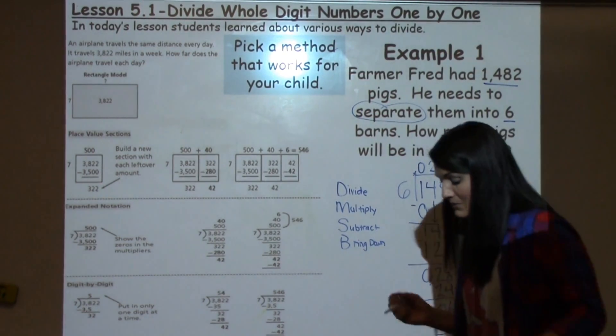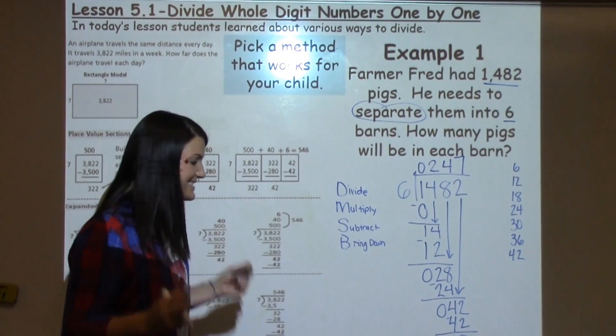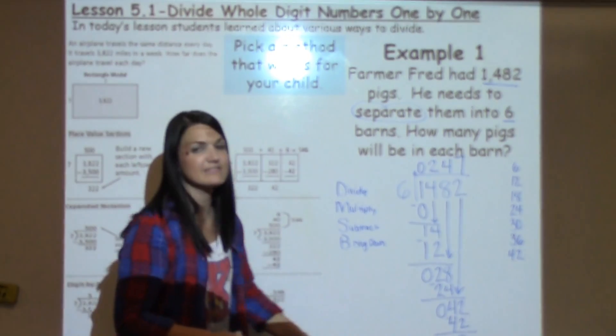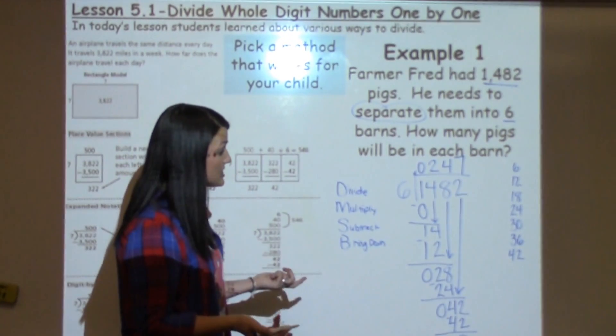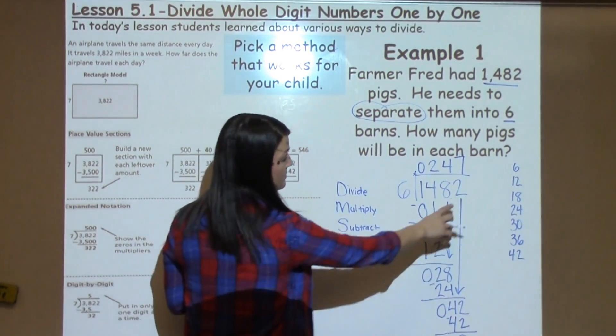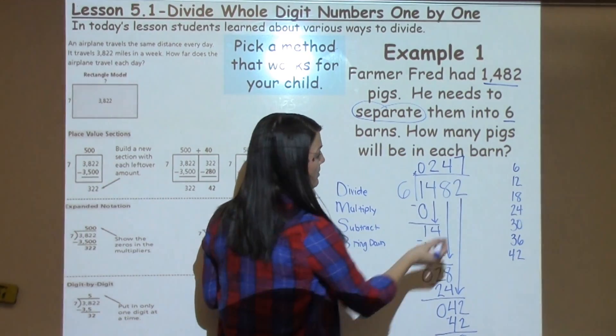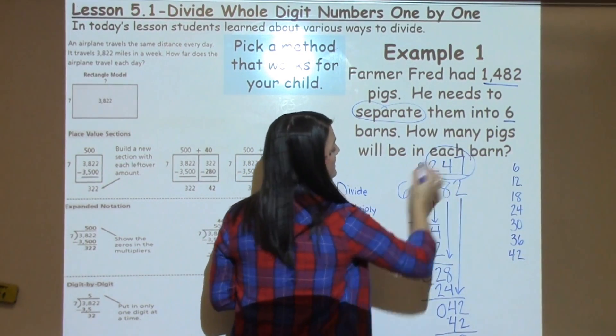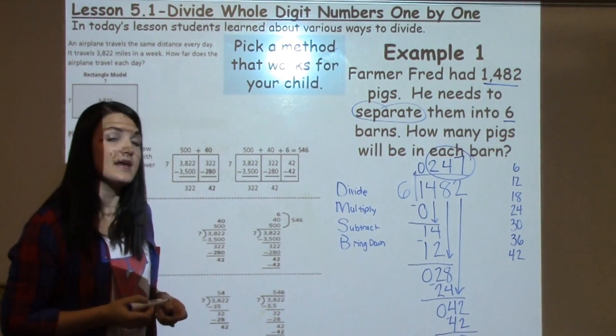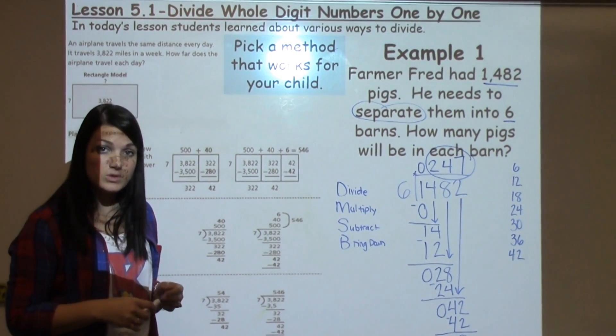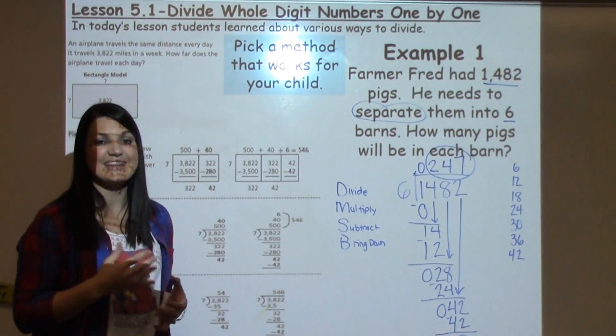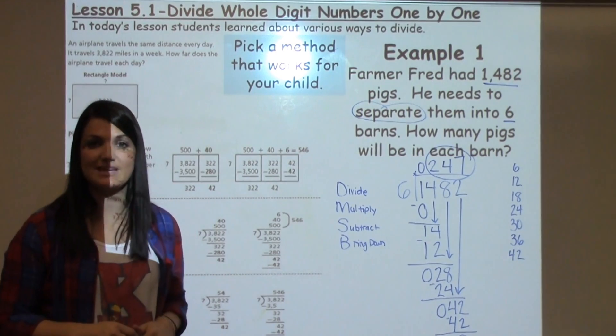And in my class we always get really excited when we get a number that's exactly what we need because then we know that we have a 0 left over. And we either get to start fresh if we have another number to bring down. Or in this case there's nothing else to bring down so our problem is complete. The answer on the very top of the division line is called your quotient, which is your answer to a division problem. And in this case the answer would be 247.